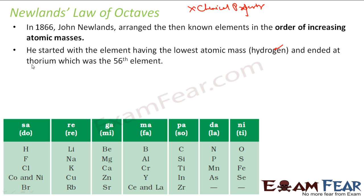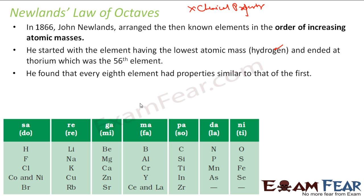He started with hydrogen and ended with thorium, which was the 56th element at that time. He observed that every eighth element is similar to the first. For example, hydrogen and fluorine had similar properties; lithium, sodium, and potassium had similar properties; magnesium and calcium had similar properties.